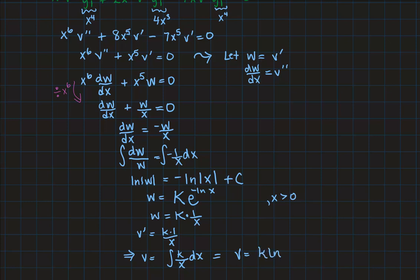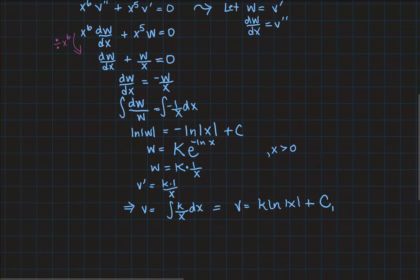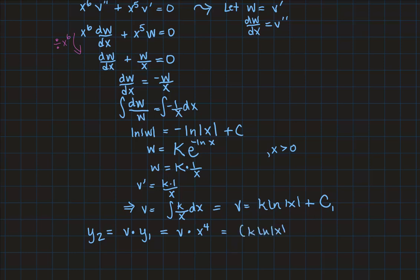And from here now, I just need to, now that I know what v is, I get my y2 by replacing, remember y2 is supposed to be v times y1, or v times x to the fourth, and therefore I get that it is k natural log absolute x plus c1 times x to the fourth, where k and c1 are any real number. So this gives me a second solution.